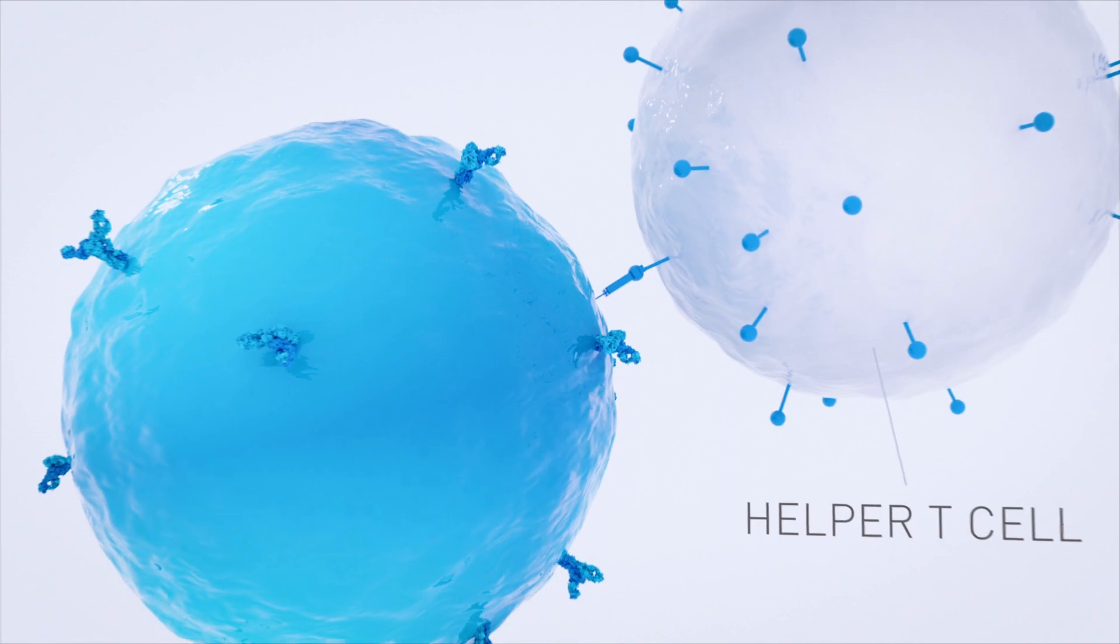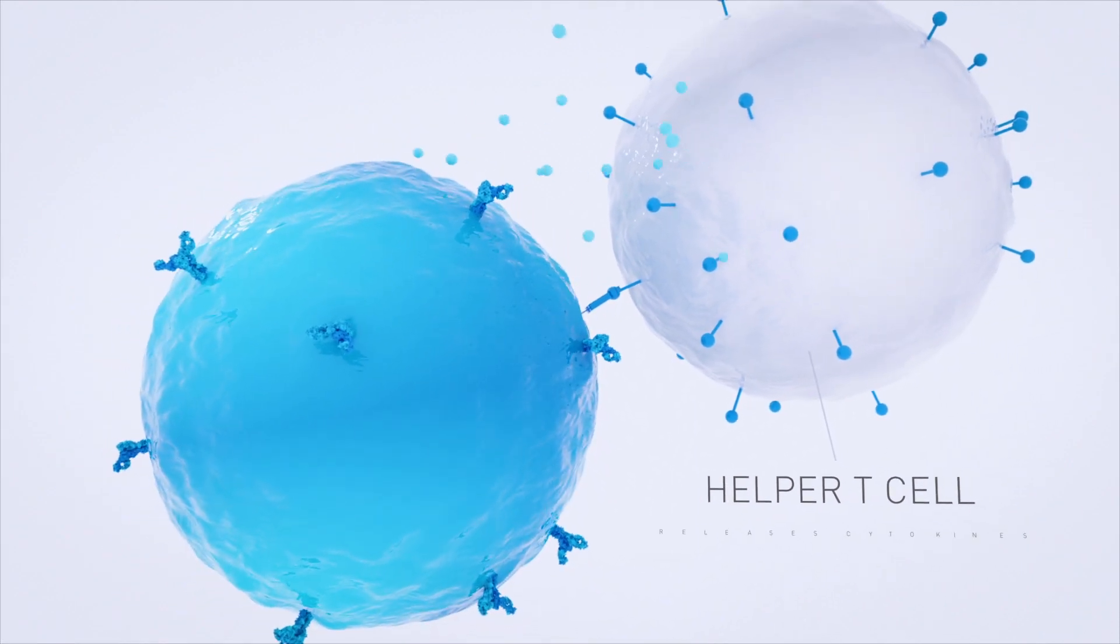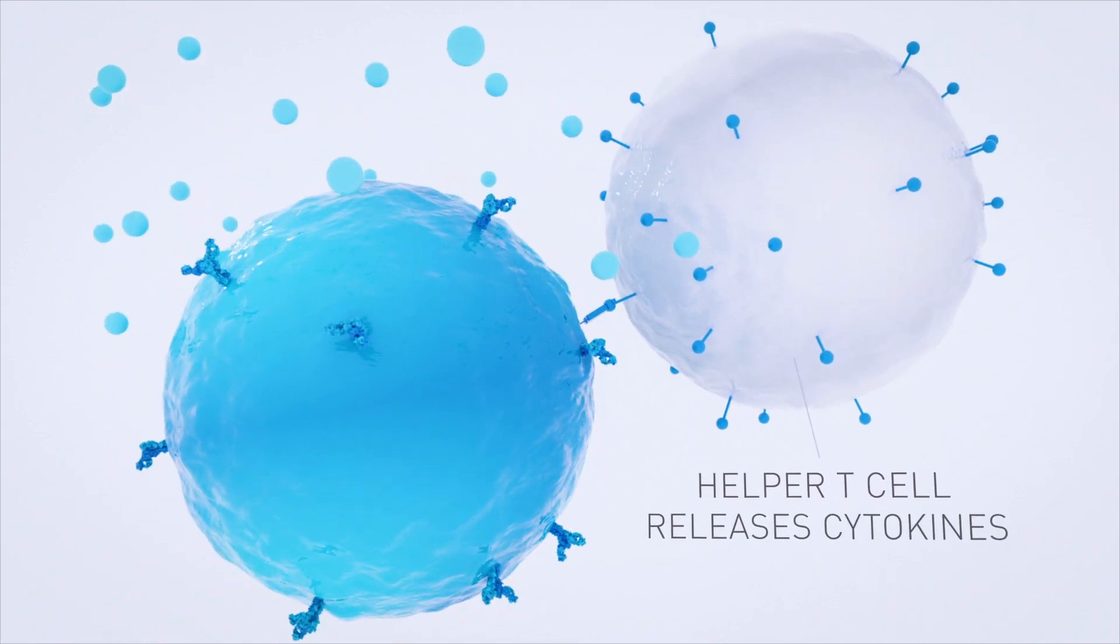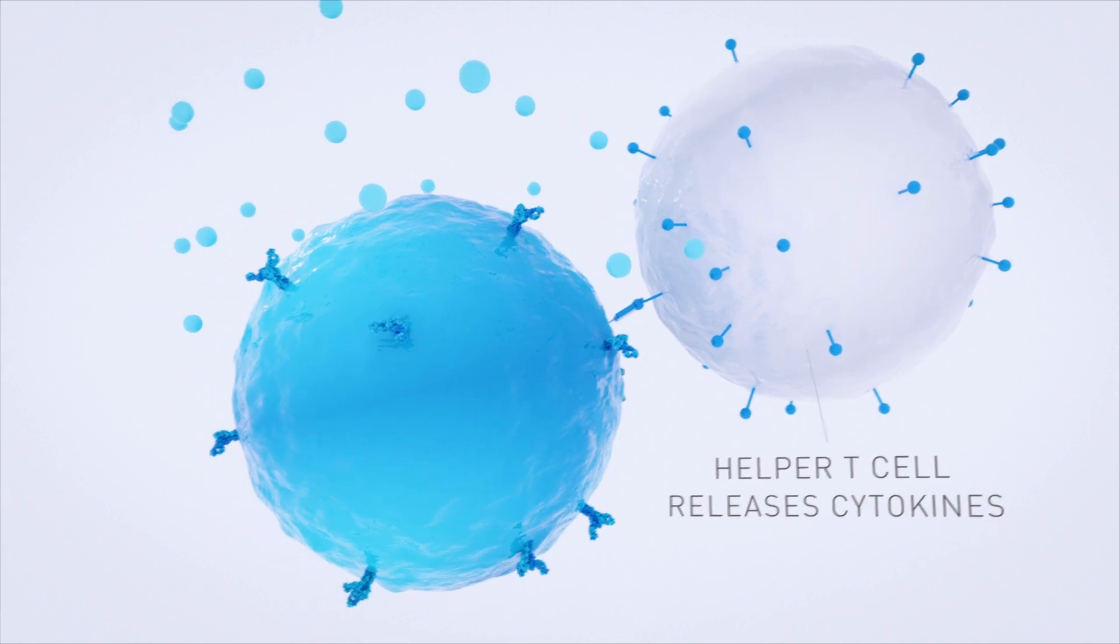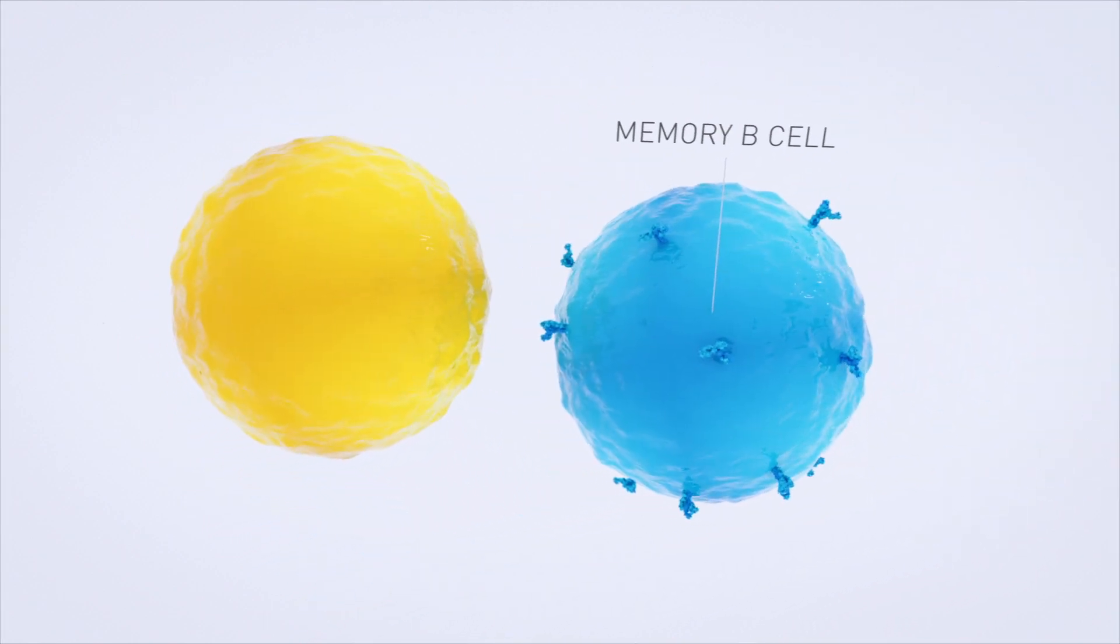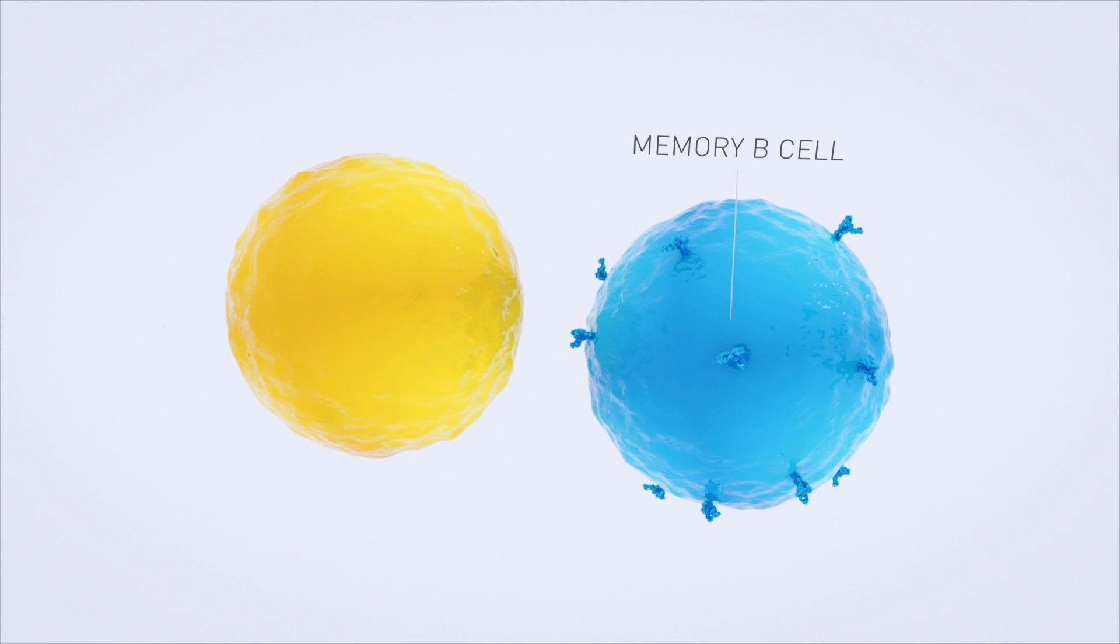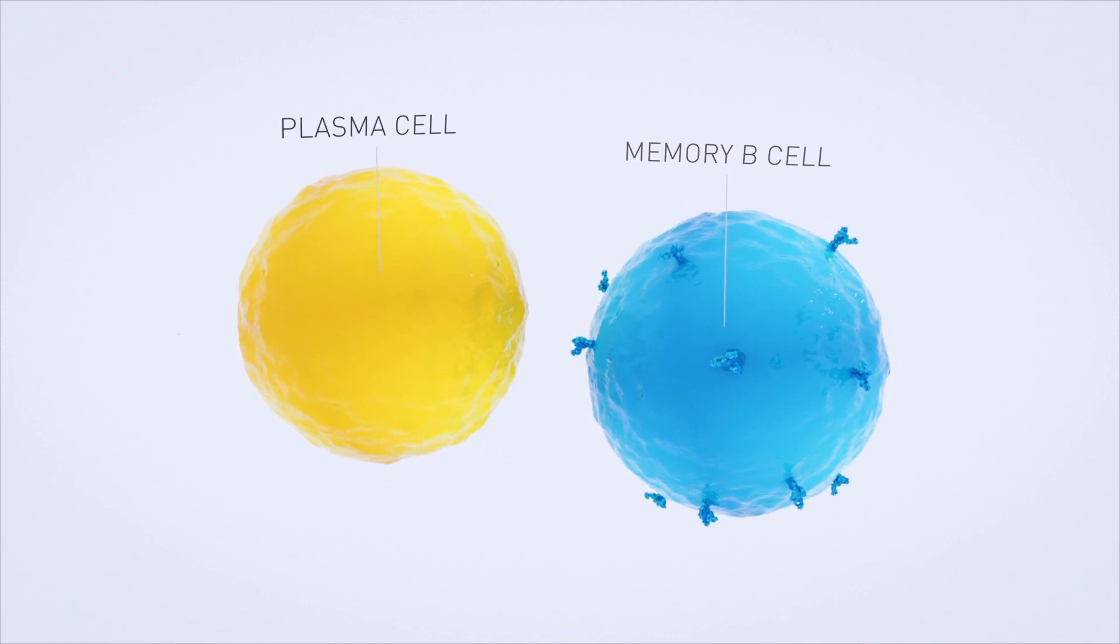Helper T cells bind to the MHC2 and release cytokines. The cytokines and T cells help cause the B cell to clone itself into memory B cells, containing the same receptors and also into plasma cells.